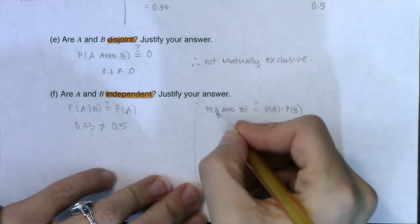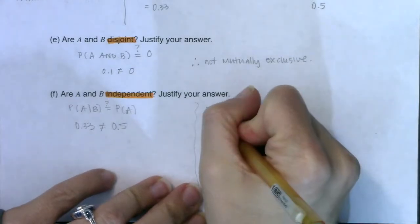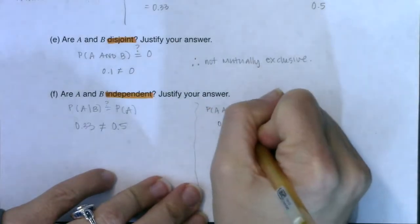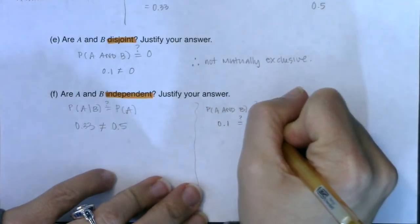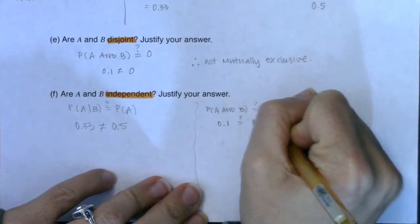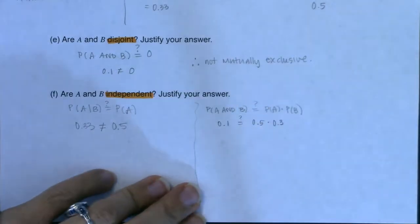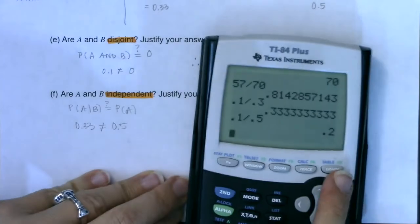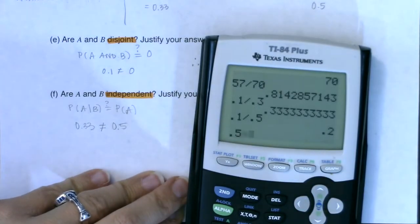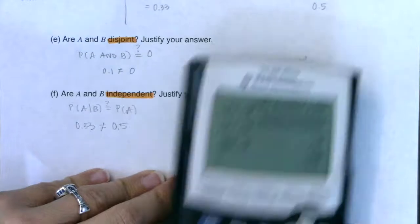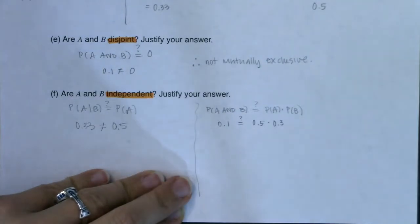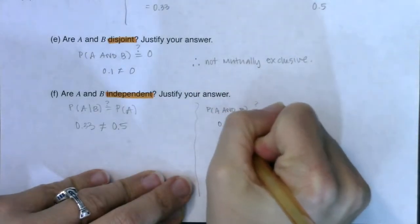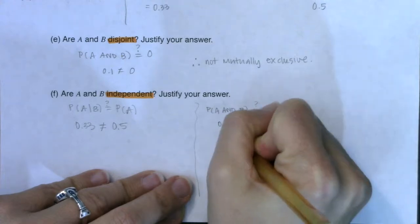So we know our answer is going to be no, these are not independent events. But let's watch it play out here. What was the probability of A and B? That was 10%. Is that equal to 50% times 30%? Well, let's find out.